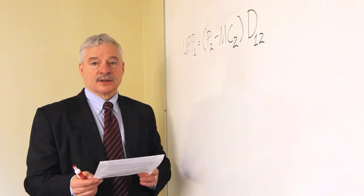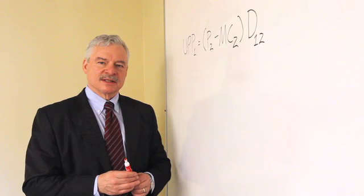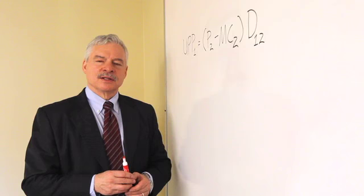What's the value of diverted sales? What's upward pricing pressure? And why, as the guidelines go on to say, is this an indicator that's useful when products are differentiated?